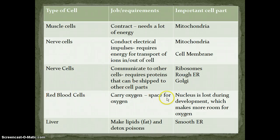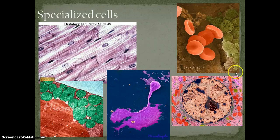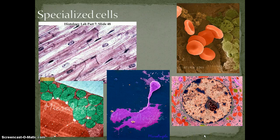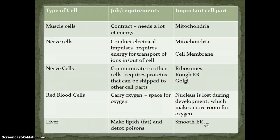Red blood cells have to carry oxygen. If you look at the red blood cell, you actually wouldn't see a nucleus. When red blood cells are made in your bone marrow, the nucleus is actually ejected from the cell so that it has more room for oxygen. No nucleus — unlike the liver cell, which has a nucleus — because it needs more room for more oxygen. That's why you can't make more red blood cells from red blood cells; they get made from bone marrow cells. And as mentioned, the liver makes fat and detoxes poisons, which is why the smooth ER is so important. Different cells have different jobs, which means they're going to have different amounts of cell parts, and those cell parts work to help that cell do its job.